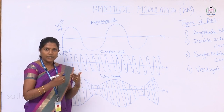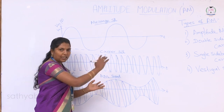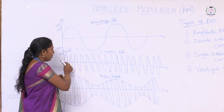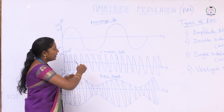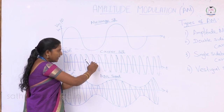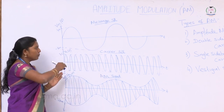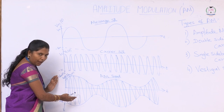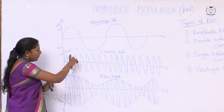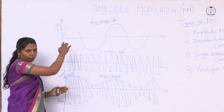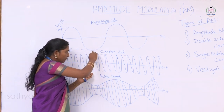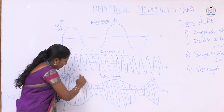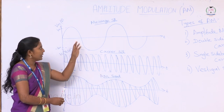The carrier signal is a generated waveform having constant amplitude and high frequency. Since the frequency is very high, the time period will be very small. Amplitude modulation occurs when the carrier signal and the message signal are combined — the superimposition of the message signal over the carrier signal is called amplitude modulation. The amplitude of the carrier signal rises when the message signal goes positive and reduces when the message signal goes negative. The envelope of the amplitude modulation represents the message signal.